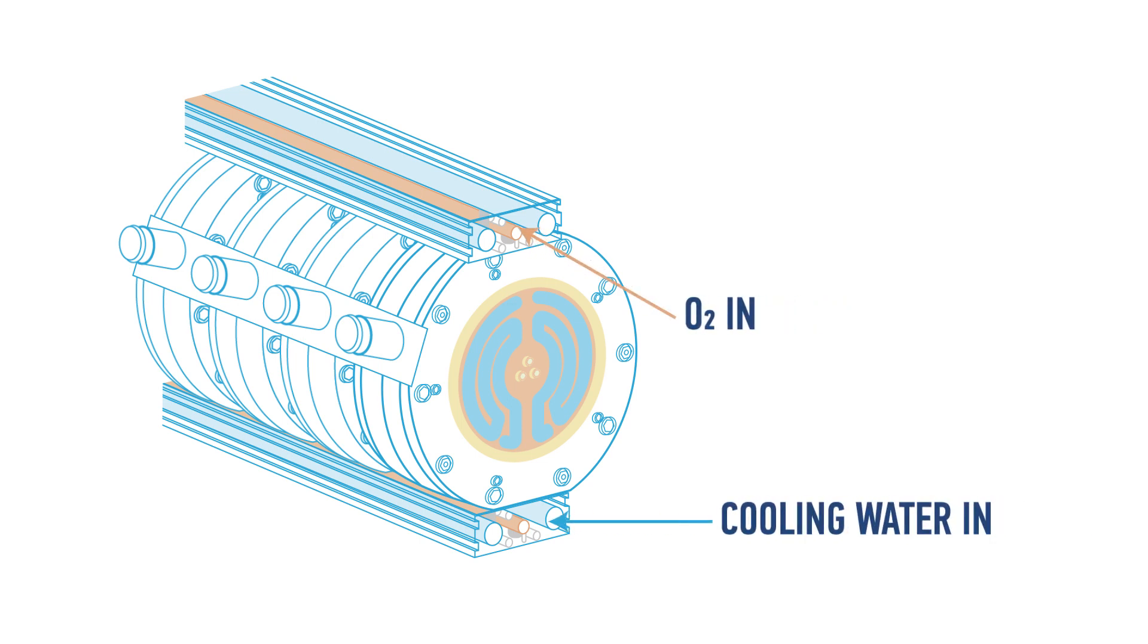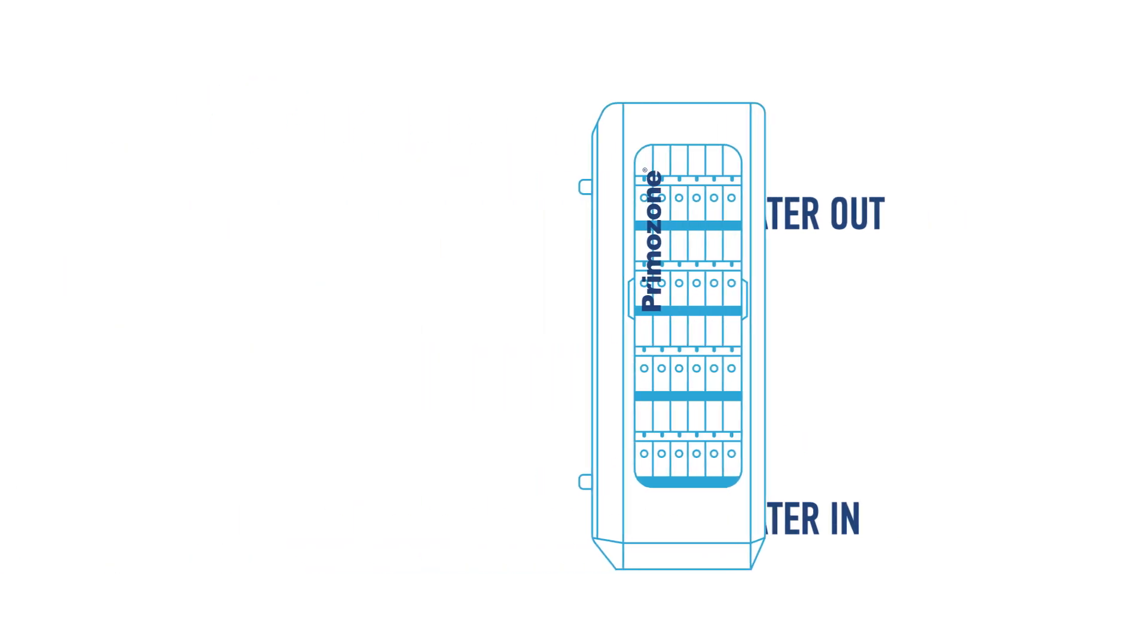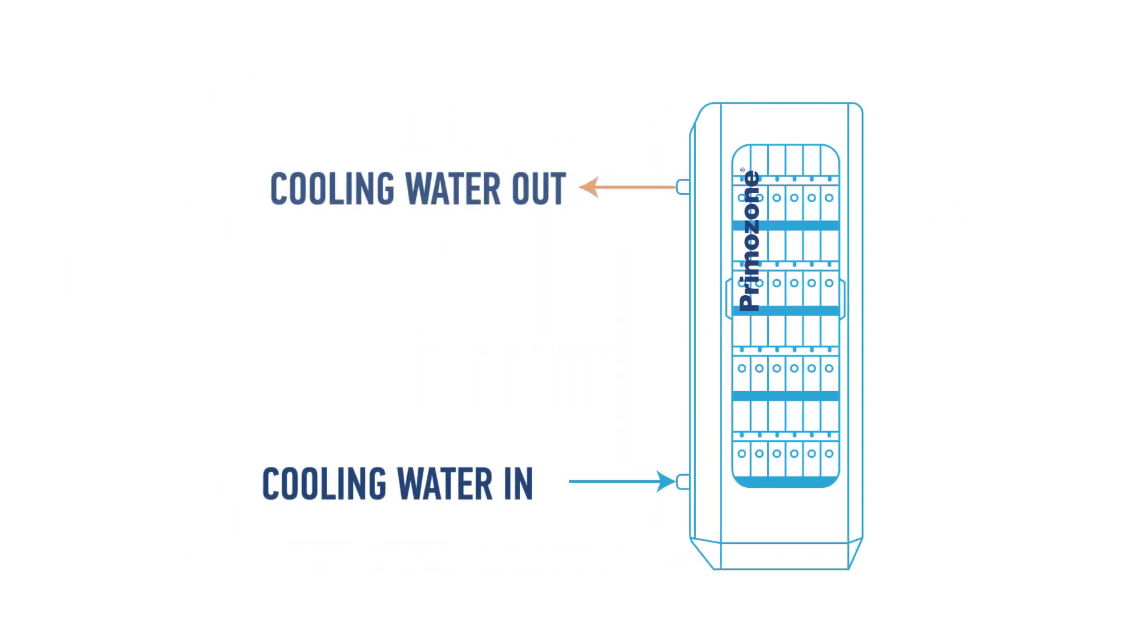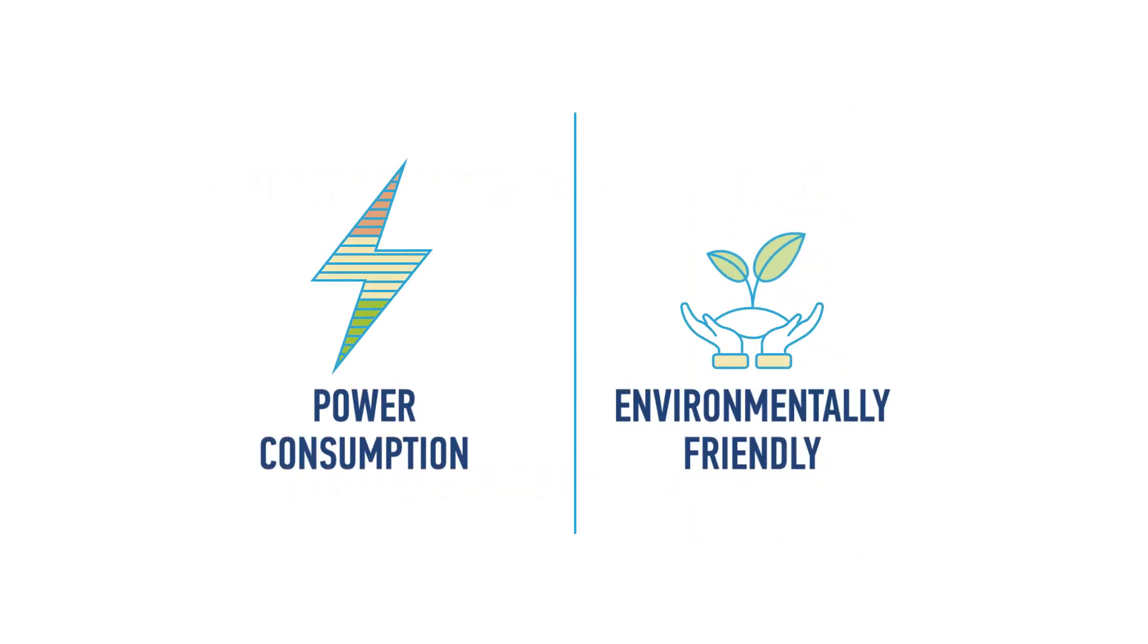Primazone patented aluminum framework serves as cooling for both reactors and power supply units. With the internal water cooling system, Primazone generators need no closed air-conditioned space. That lowers energy use and leaves a smaller environmental footprint.